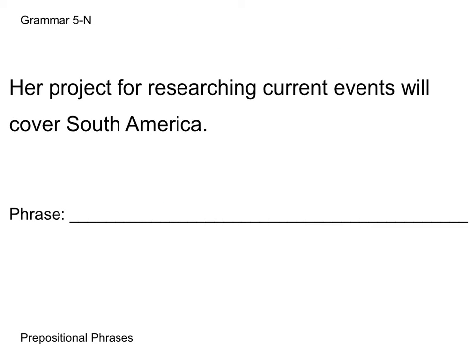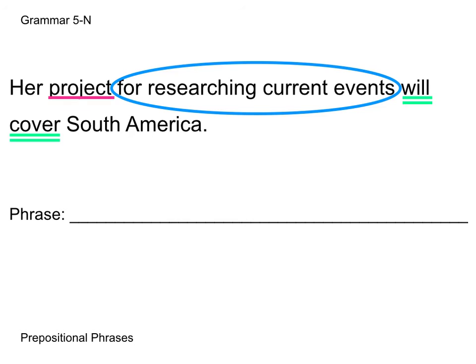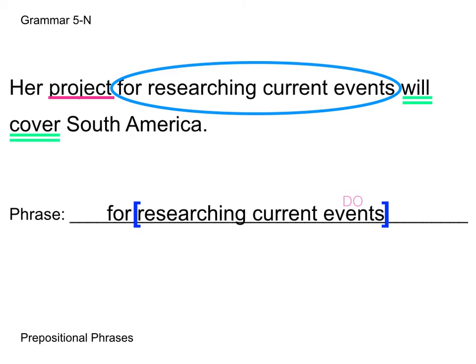Let's look at one more example: Her project for researching current events will cover South America. As you progress through the booklet, you'll identify the prepositional phrase and then the phrase within the phrase. I like to find the subject and verb first to help narrow down the search. My subject is "project" and my verb phrase is "will cover," with South America as the direct object. After finding subject and verb, it's quite obvious our prepositional phrase is "for researching current events." I rewrite that on the line provided and bracket the verbal phrase "researching current events" — "researching" is the verbal, and "events" is the direct object of what's being researched.